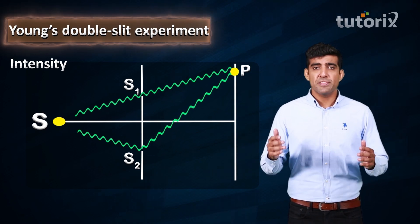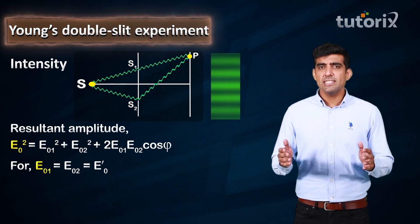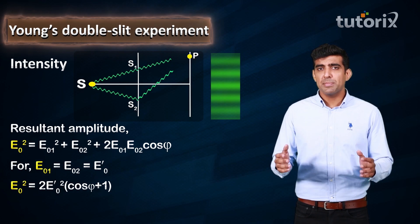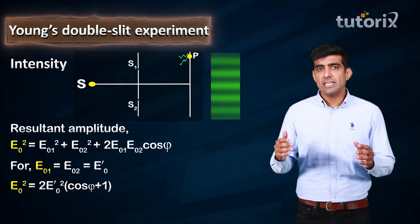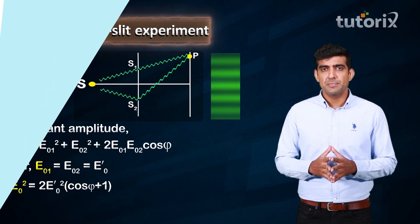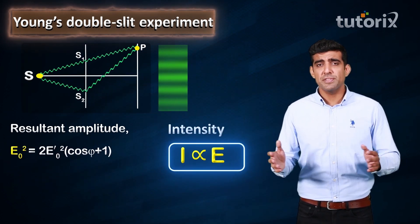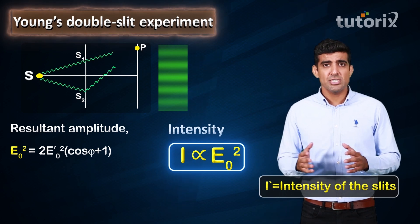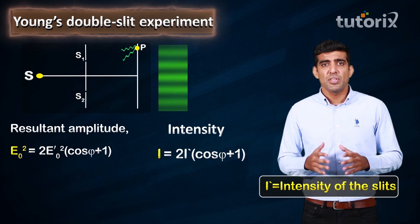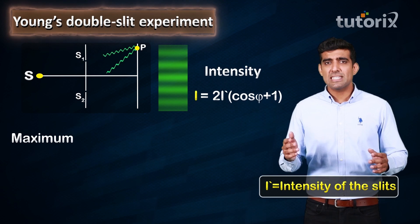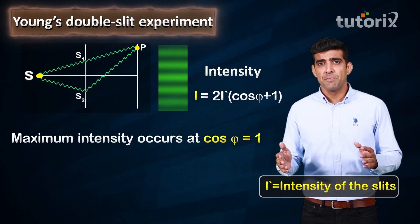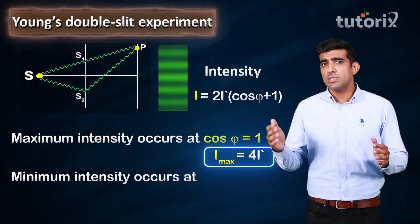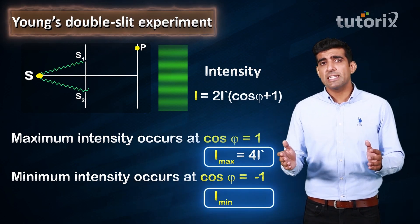Now let us talk about the intensity of the resultant pattern on the screen. For a special case when the amplitude of the two slit sources is the same, written as E0', the square of the amplitude of the resultant wave is E0² = 2E0'²(cos φ + 1). Since intensity of a light wave is proportional to the square of its amplitude, the intensity of the resultant wave can be written as 2E0'(cos φ + 1). The maximum intensity occurs when cos φ = +1, giving maximum intensity = 4E0'. The minimum intensity occurs when cos φ = −1, giving minimum intensity = 0.